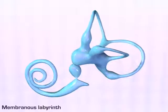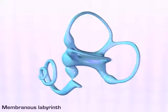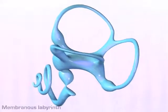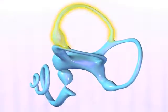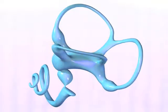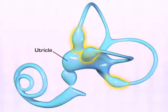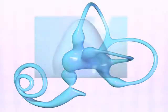The structure of the membranous labyrinth consists of three semicircular ducts positioned in three separate planes: anterior, posterior, and lateral. Each of the ducts has a widened space called an ampulla where it connects with the utricle.